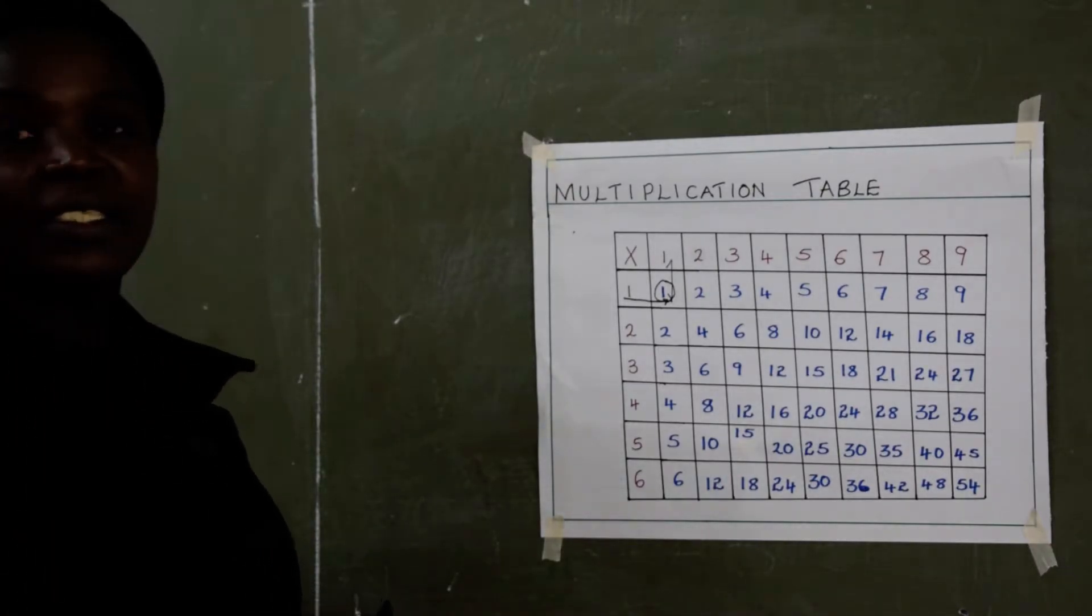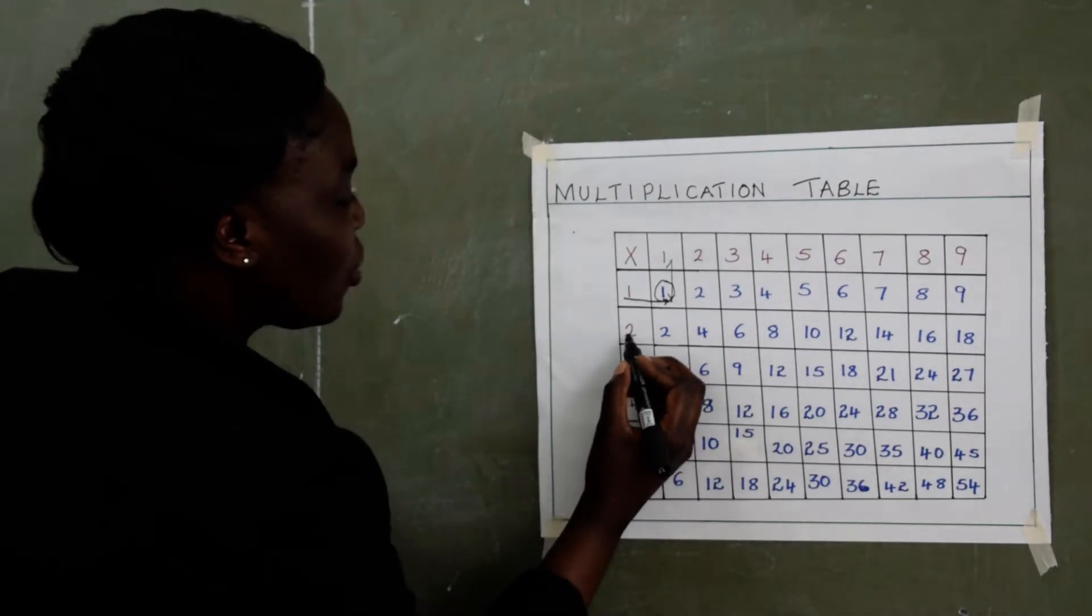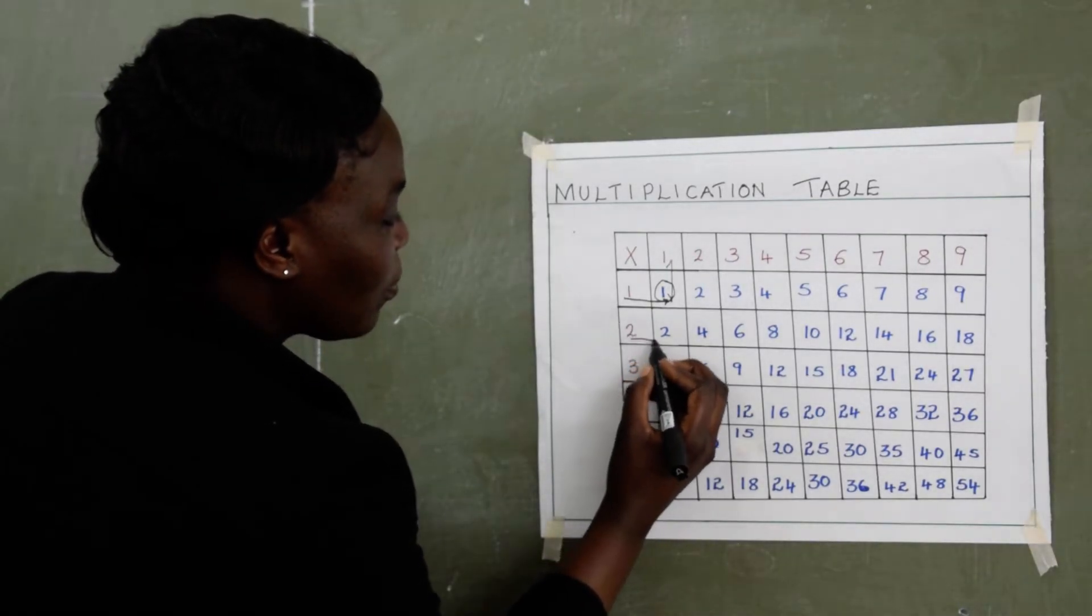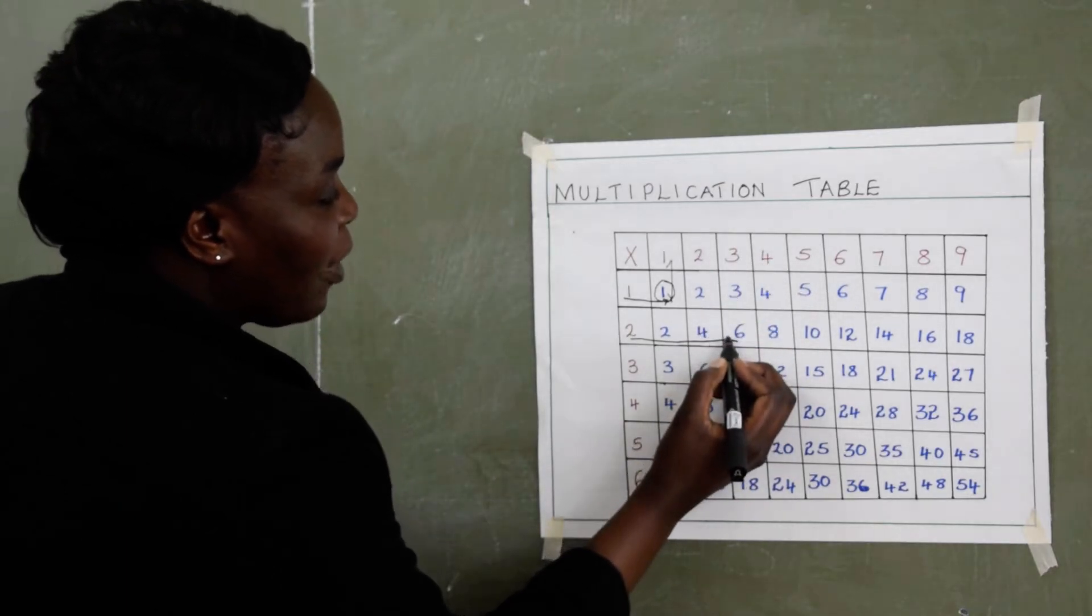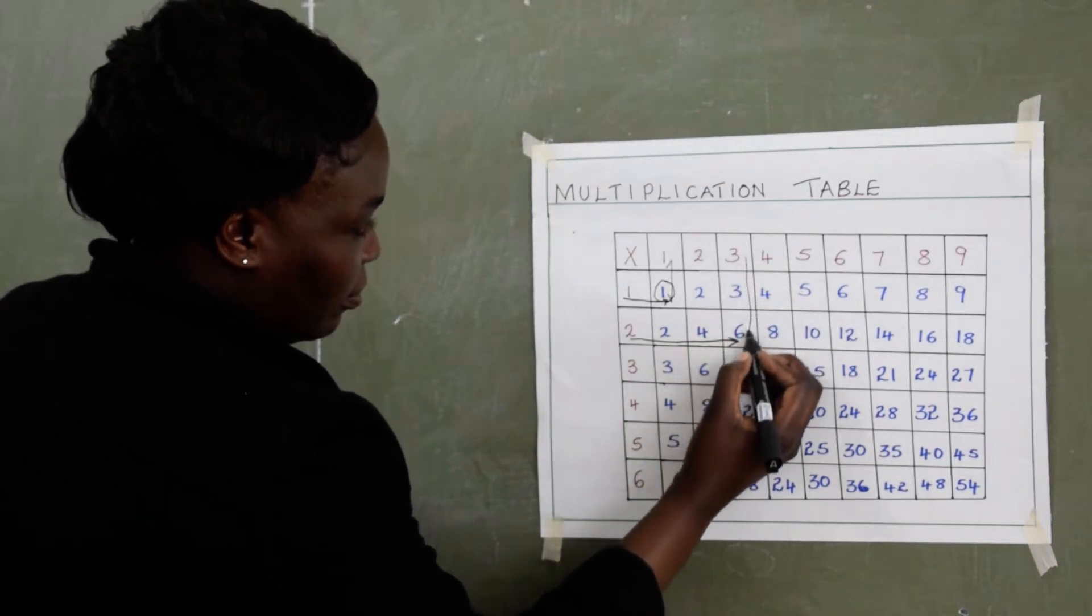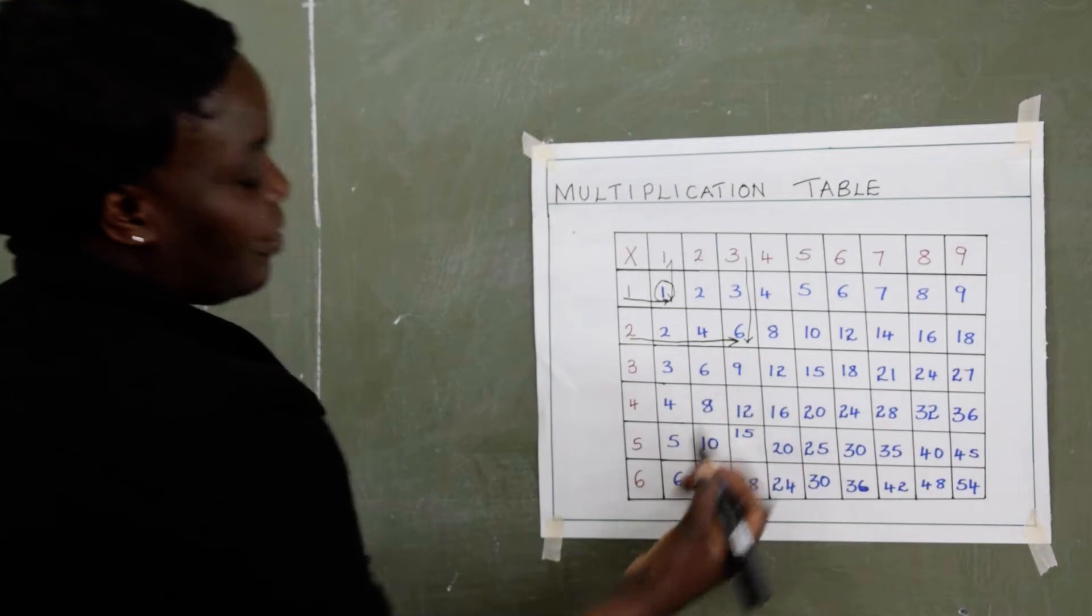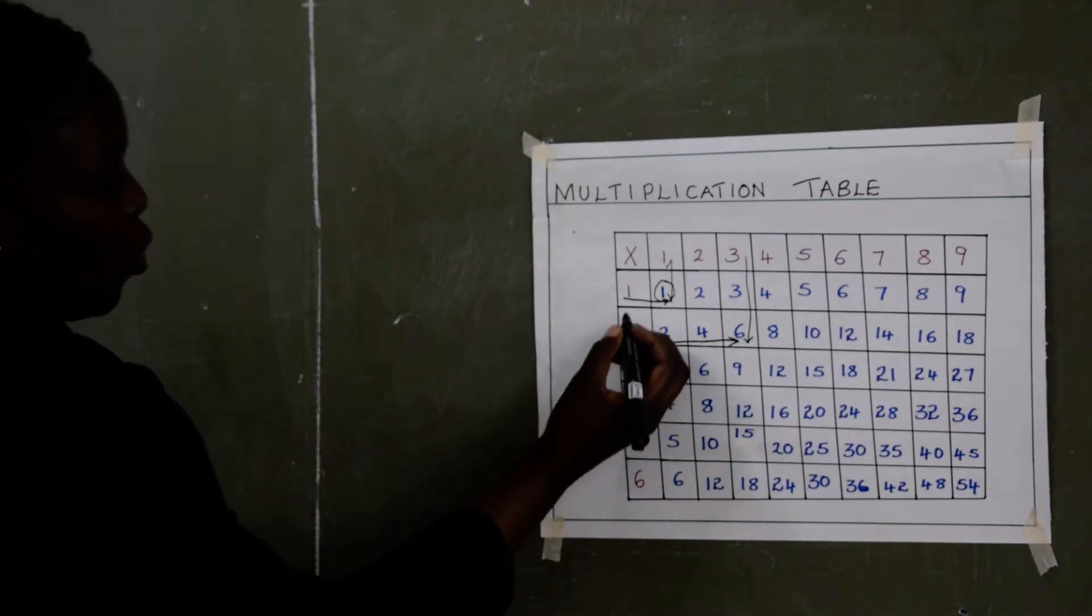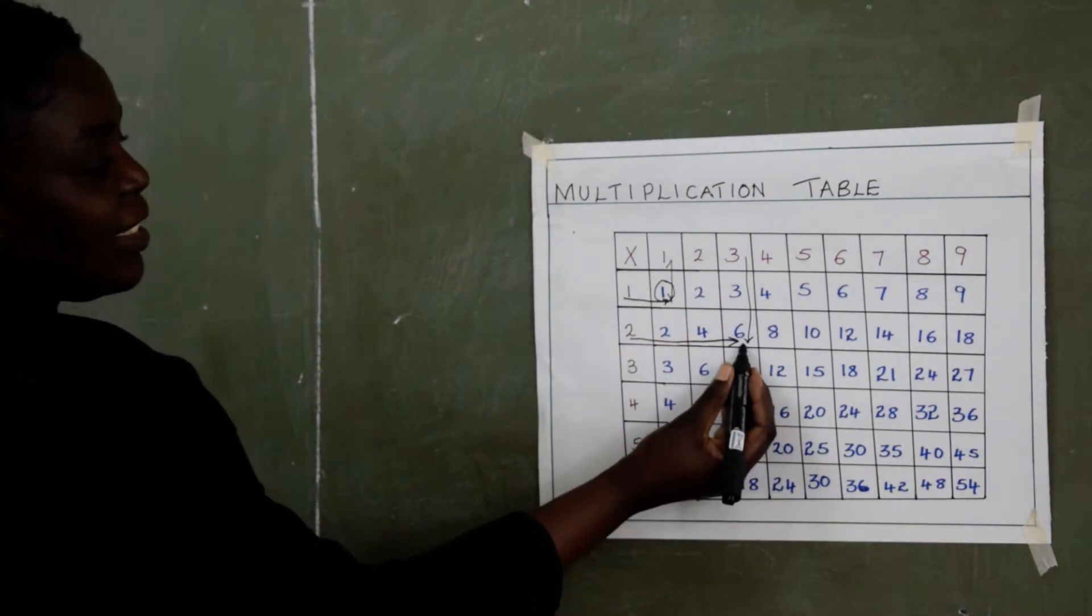2 times 3. So I will start from 2. Then until where you see 3 is up there. Where they meet is the answer. So 2 times 3 is 6.